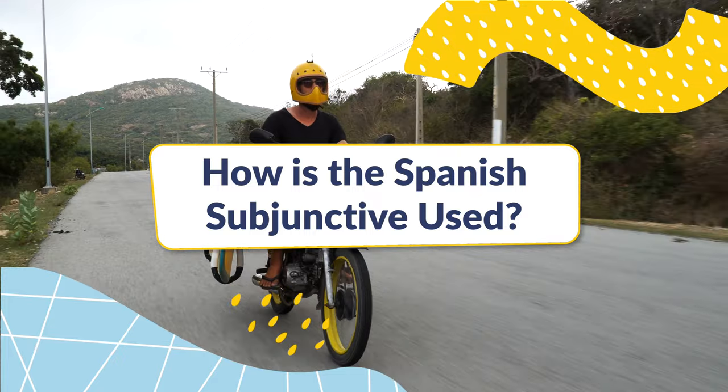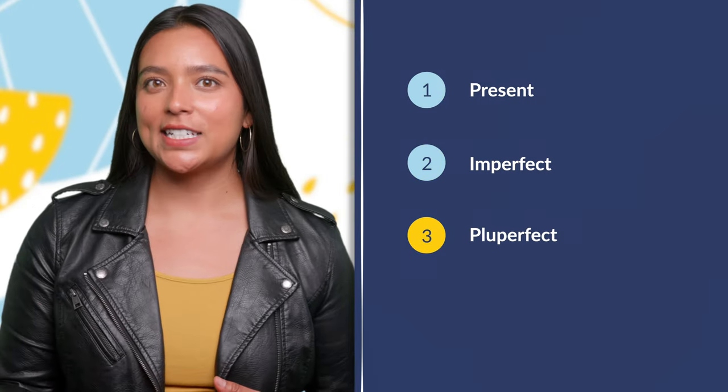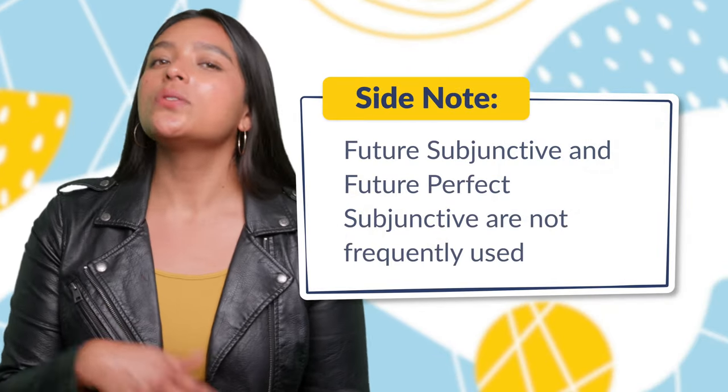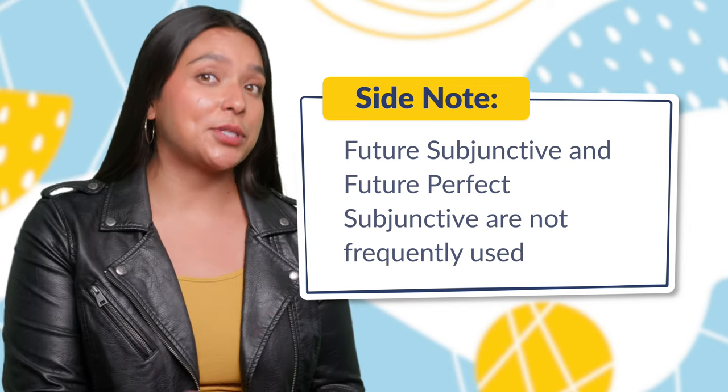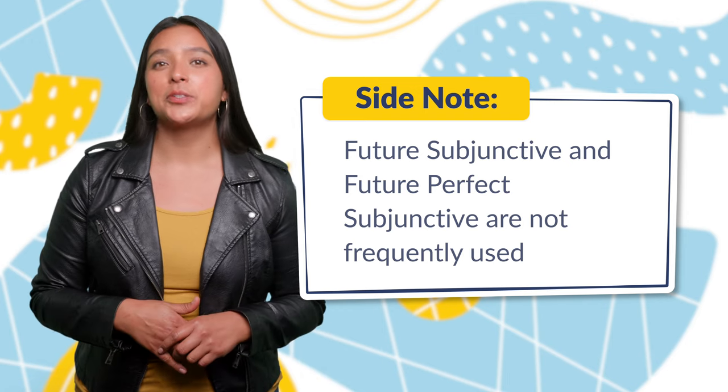How is the Spanish subjunctive used? So we know that the subjunctive is a mood, but how is it used when we apply it to different tenses? There are four different tenses of the subjunctive that you need to know, depending on whether you want to talk about the present, past, or future. They are: present, imperfect, pluperfect — also known as past perfect — and present perfect. Side note: there's also the future subjunctive and the future perfect subjunctive, but these are mostly found in old literature or legal documents and are not used by Spanish speakers on a daily basis, so we can ignore those for now.